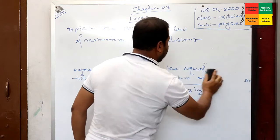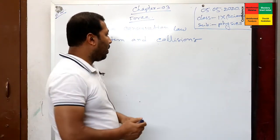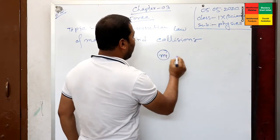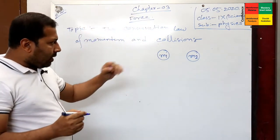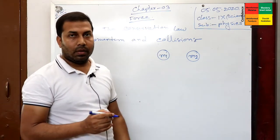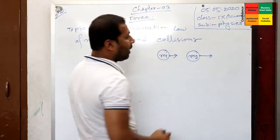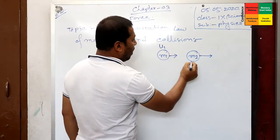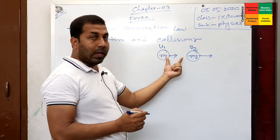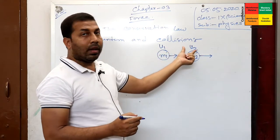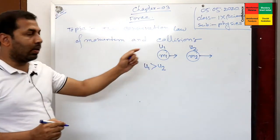I will show you how to get the idea. I have been considering here two bodies: one is m1 and another is m2. Both bodies are going along the same direction. m1 is moving in this direction, m2 also in this direction. The velocity of m1 is u1 and the velocity of m2 is u2. This is the initial condition. For them to collide, u1 must be greater than u2. So the condition is u1 is greater than u2.